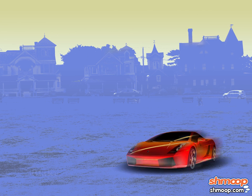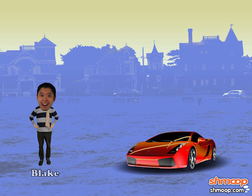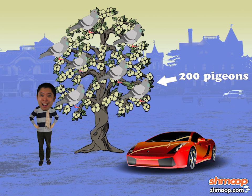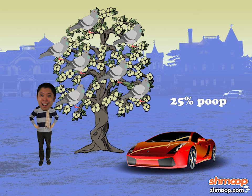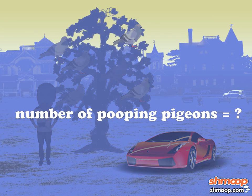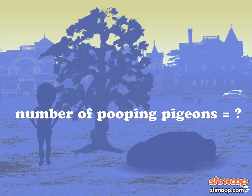Right now, she's about to get out of her car and approach the boy she dreamed about all through high school, but she's parked under a tree. If 200 pigeons sit in that tree and 25% of them poop on Candace, how many pigeons poop on her head?